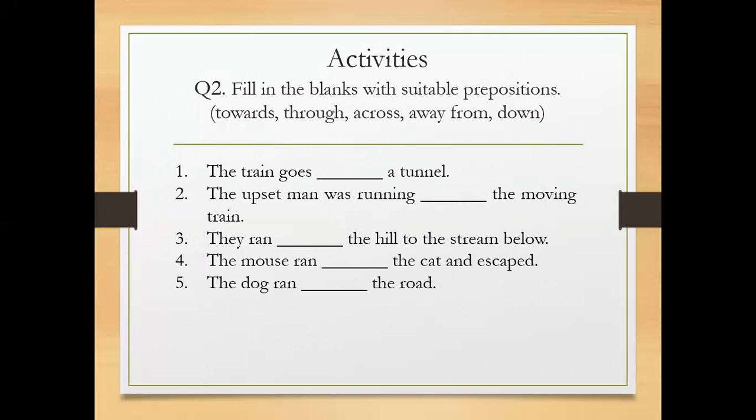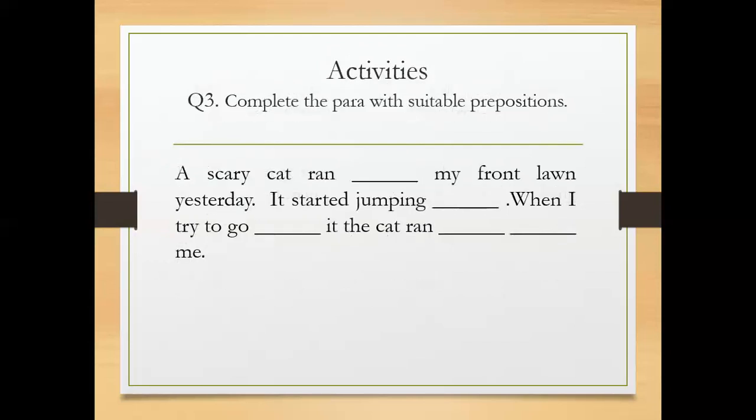Now let's go to question number three. Complete the para with suitable prepositions. A scary cat ran dash my front lawn yesterday. It started jumping dash. When I tried to go dash it, the cat ran dash dash me. You might fill the para like this: a scary cat ran across my front lawn yesterday. It started jumping around. When I tried to go towards it, the cat ran away from me.